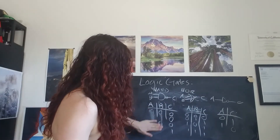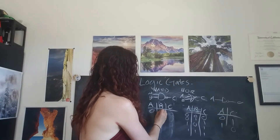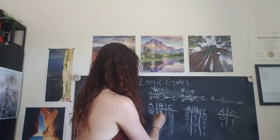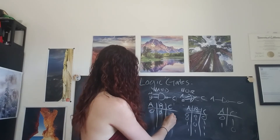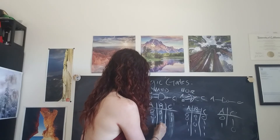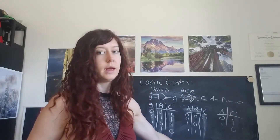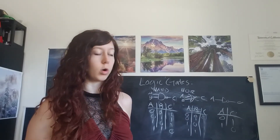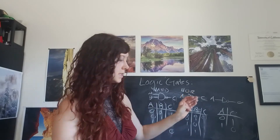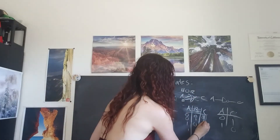The NAND gate is the opposite of the AND gate. So if it's zero-zero you get one, zero-one you get one, one-zero you get one, and one-one you get zero. Same thing for the NOR gate — it's the opposite of the OR gate. Everywhere you would get a zero for the OR gate is now a one, and vice versa — zeroes become ones.